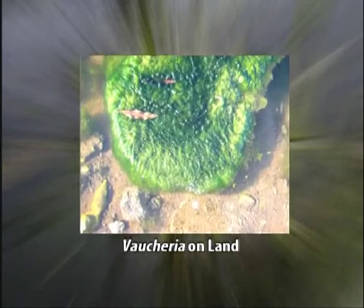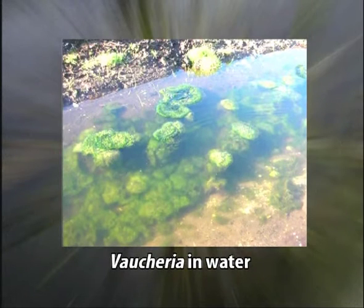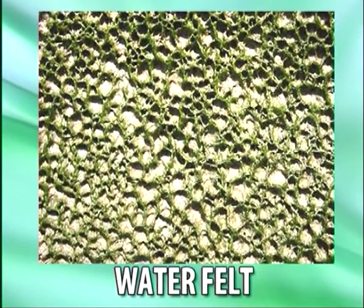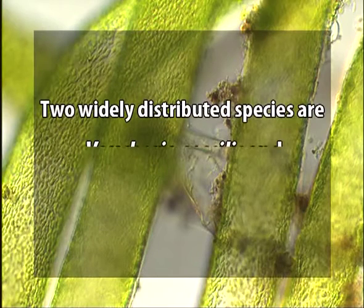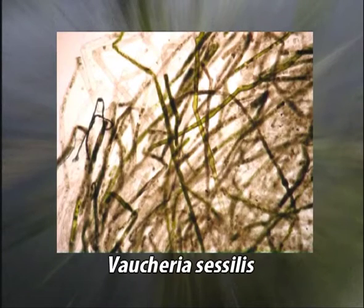The majority of these are found in terrestrial and freshwater ecosystems, while a few species are marine, like Vaucheria piloboloides. Two widely distributed species are Vaucheria cespitosa and Vaucheria geminata. Vaucheria cespitosa occurs both on land and in water, while Vaucheria uncinata is aquatic and Vaucheria amphibia is amphibious.